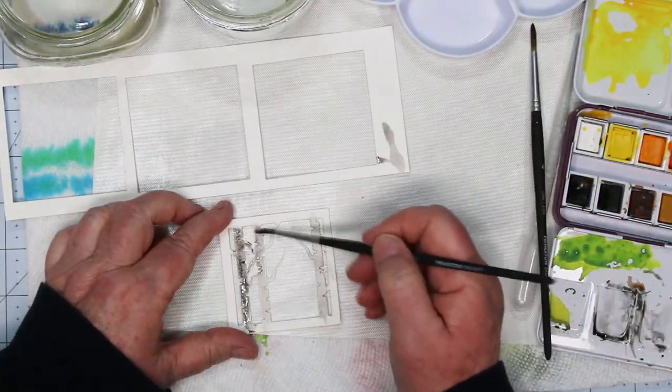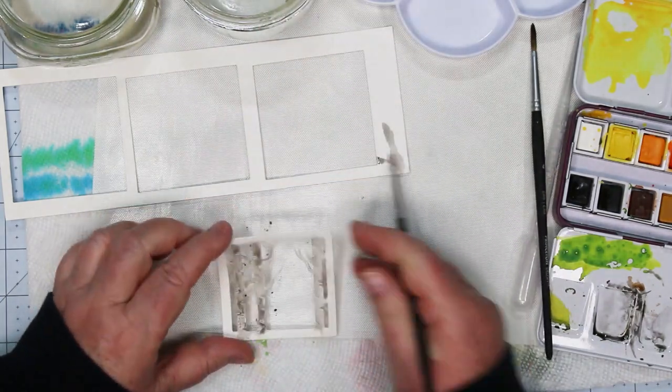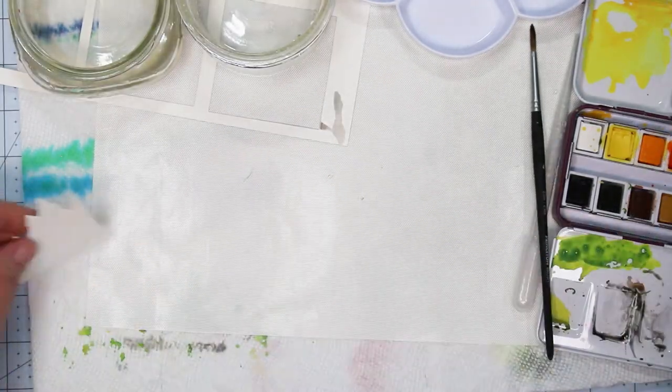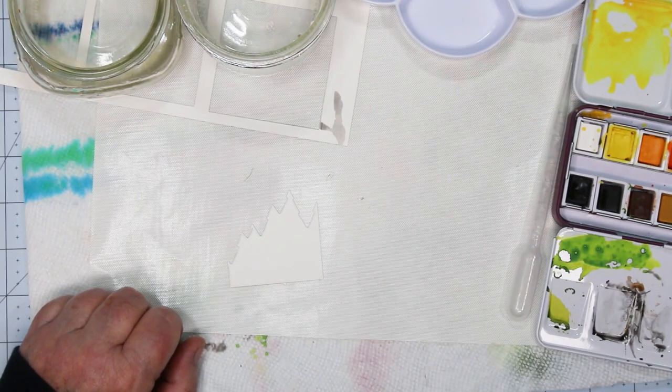So I'm watercoloring. I'm using the Altenew. I think it's 24 pack of the watercolors. And what I did was I just did a very, very light gray and went over my trees. And I'm going to let those dry before I add some more detail.